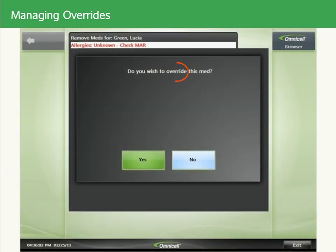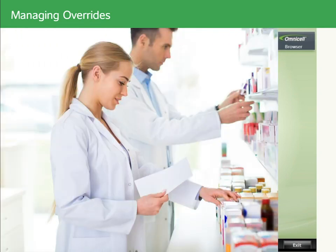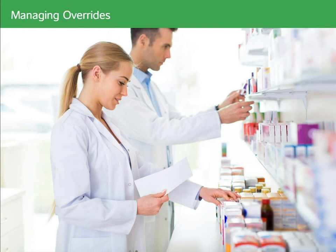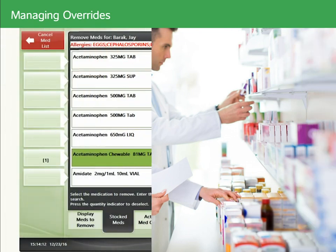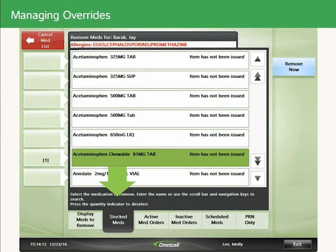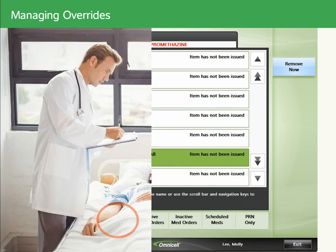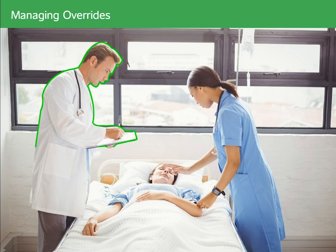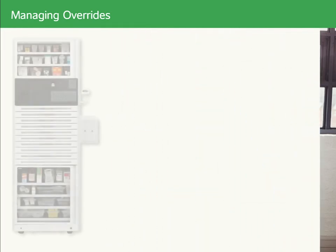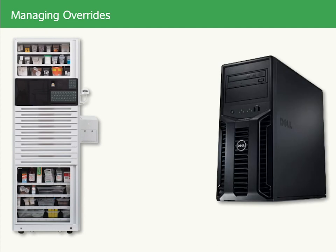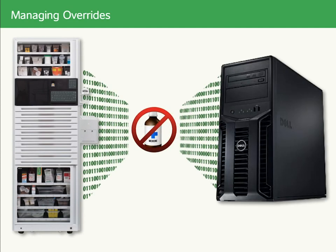An override allows you to issue an item stocked in the cabinet independent of the current medication order. Overrides are based on user permissions and how different medications are configured in the pharmacy. For example, you can use the Stocked Items tab to remove a medication when a new order has been written by a physician who is present to supervise the administration, or if medications are not being sent from the system server.